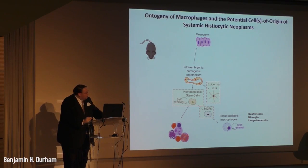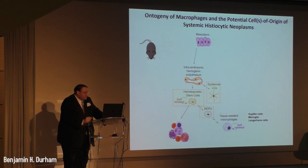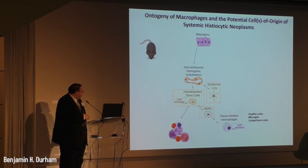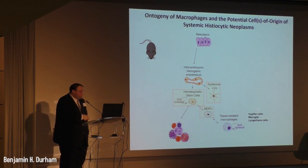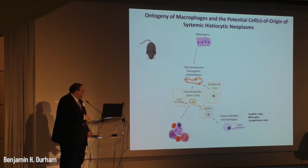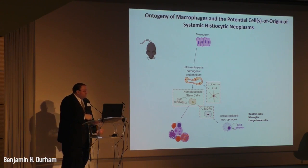Before we move into our work on mouse modeling, there's also been a lot of work on the ontogeny of macrophages in the mouse system. The mesoderm gives rise to intra-embryonic hemogenic endothelia, which gives rise to epidermal Langerhans cells and also hematopoietic stem cells with self-renewal capacity. These give rise to monocyte dendritic cell precursors and can lead to tissue-resident macrophages, including Kupffer cells of the liver, microglia of the central nervous system, and Langerhans cells of the epidermis.